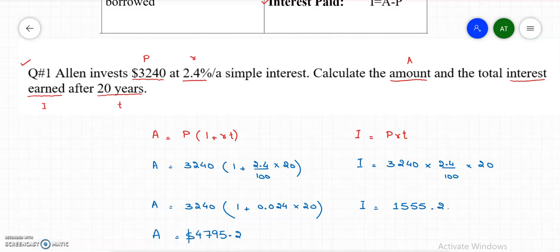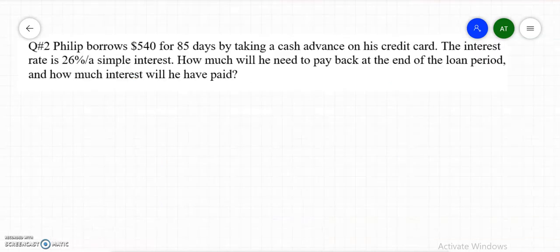Let's do another example. In the second question, Philips borrowed $540 — that is the principal — for 85 days, which is the time given, by taking a cash advance on his credit card. The interest rate is 26% simple interest.